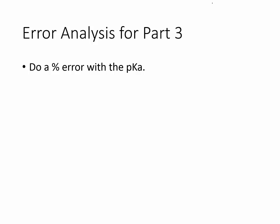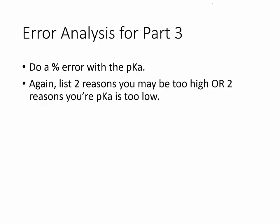For the error analysis in part three, we'll do a percent error with the pKa — check school loop for the actual pKa of the acid we used. Just like part two, list two reasons your pKa might be too high or too low. There are many possible reasons, and you have to trace all the way back to part one, since we used the standardized NaOH. If the solution is a little more concentrated than you thought, it would reach the endpoint prematurely, and your pH at that point might be too low.